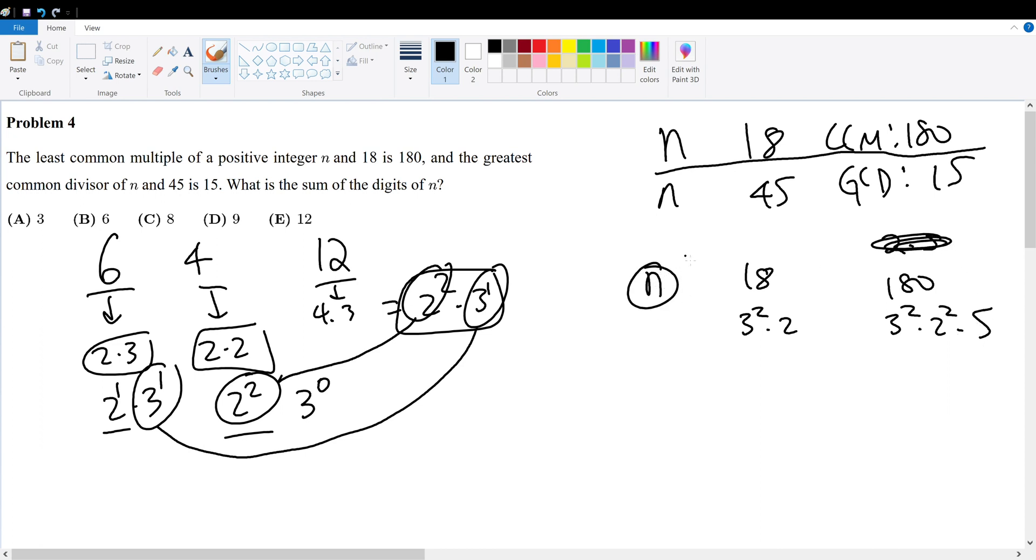We can find more information about n from the second condition, which is that the greatest common divisor with n and 45 is 15. If the greatest common divisor is 15, they must be divisible by that divisor. So n must be a multiple of 15. Prime factorize this: 3 times 5 times m for some constant. Now we can solve the question.